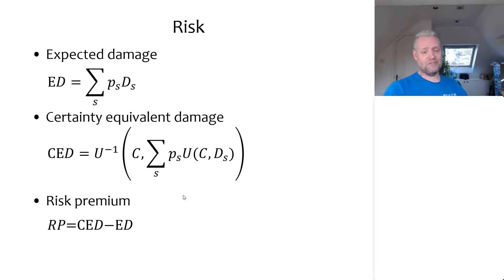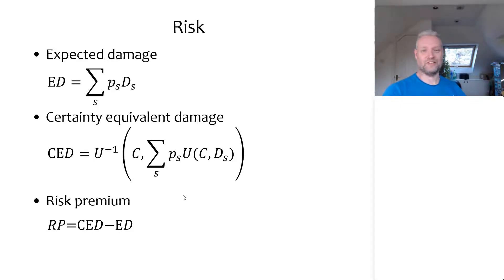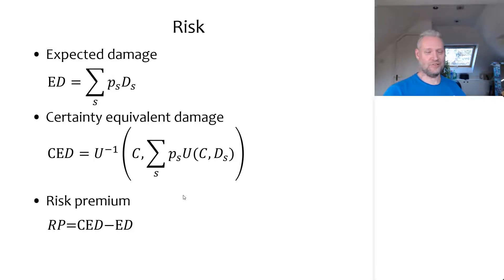The third equation at the bottom is the so-called risk premium, which is just the definition: the risk premium is the difference between the certainty equivalent damage and the expected damage. And those two operations cancel, so in the end you just end up with the same number — as we'll see from a worked example.